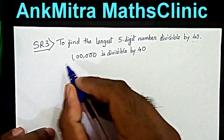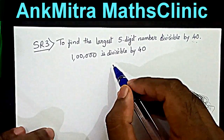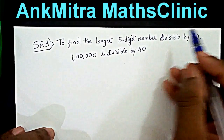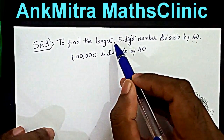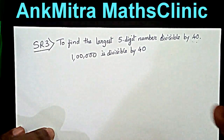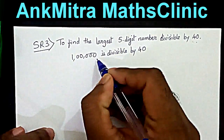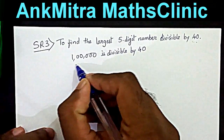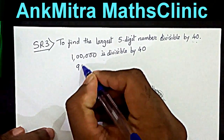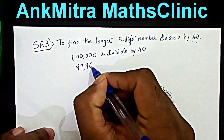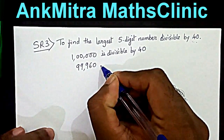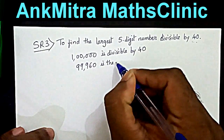So 1 lakh is the smallest six-digit number that is divisible by 40. To find the largest five-digit number divisible by 40, we'll just subtract 40 from this. Subtracting 40 from 1 lakh, we get 99,960, which is the largest five-digit number.